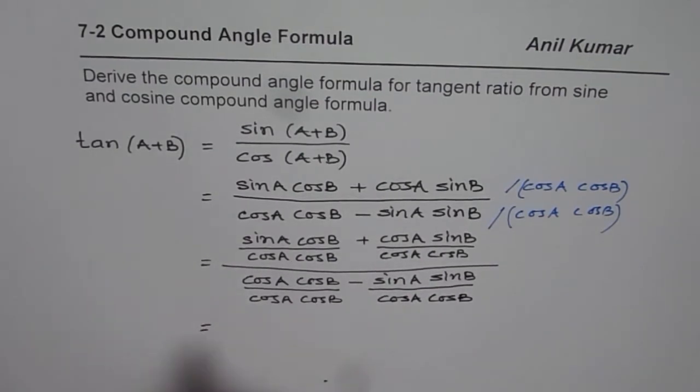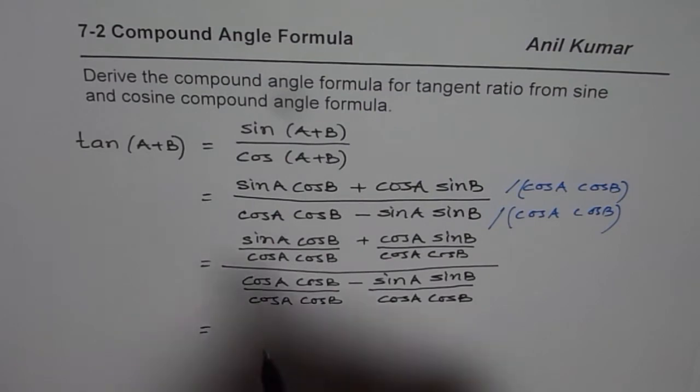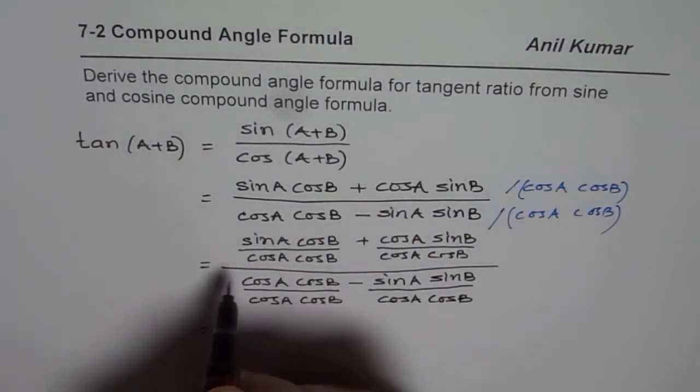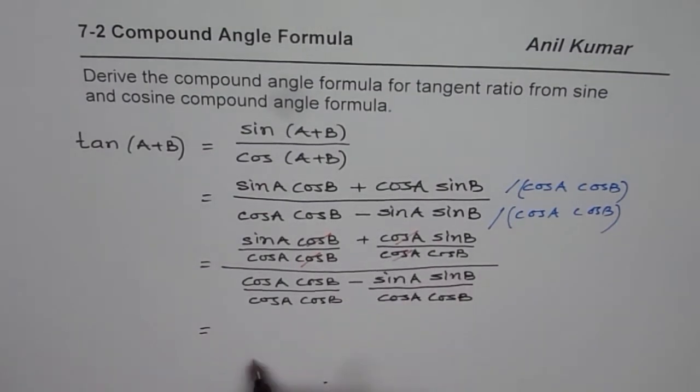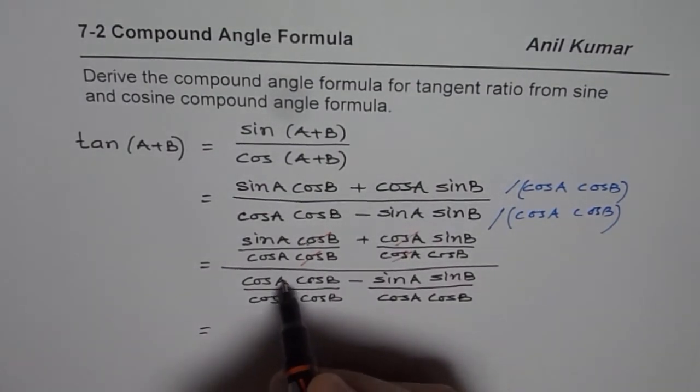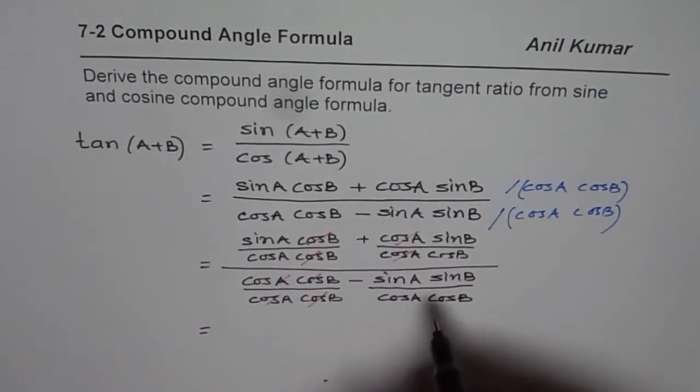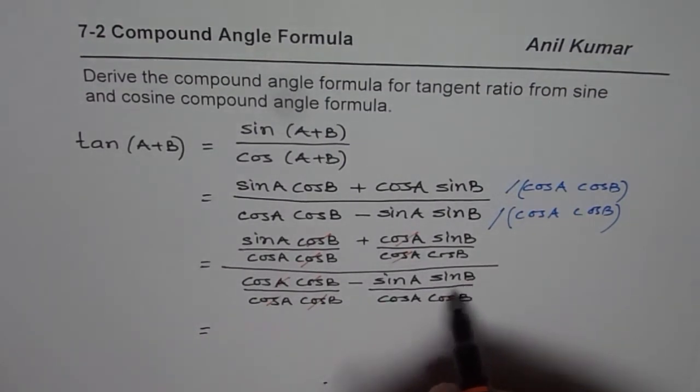So, if you do that, what do you get? Look at each term. Cos B cancels with cos B. Cos A cos A gets cancelled. Both of them cancel. You get one. And in this case, it remains as tan A tan B.